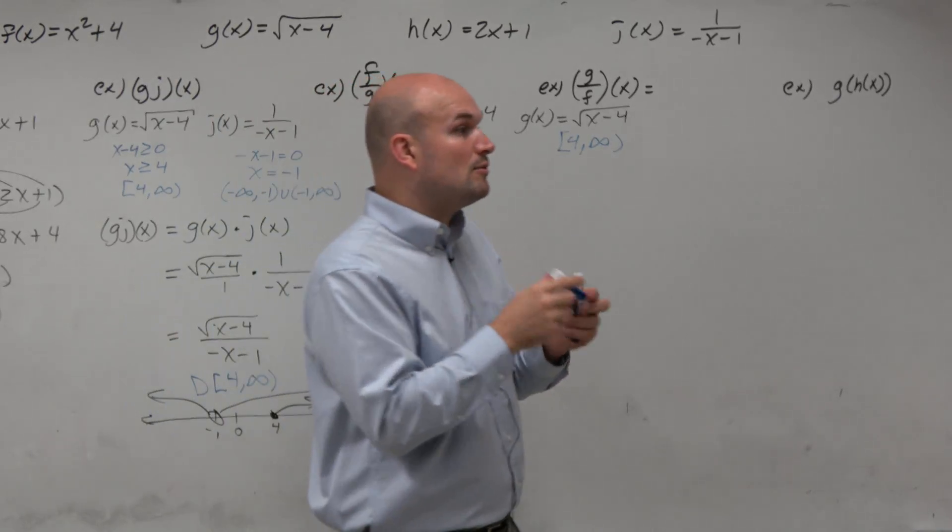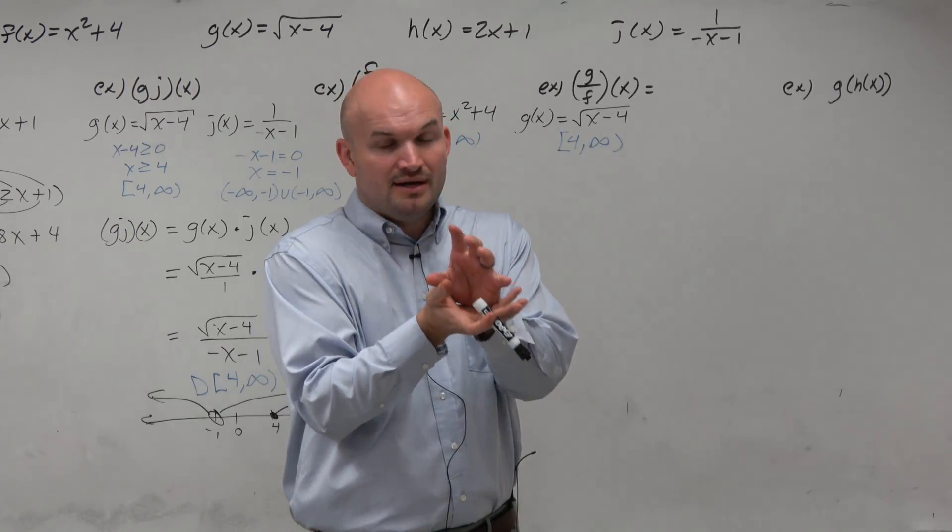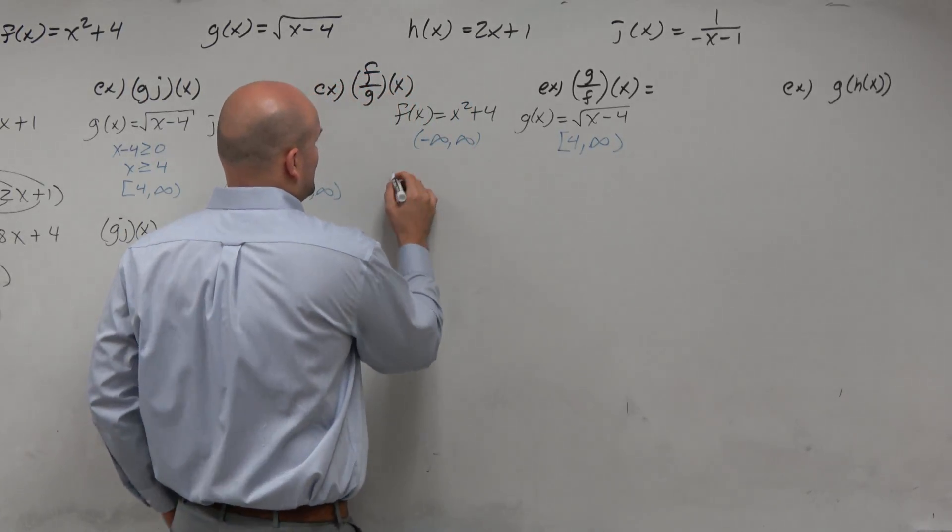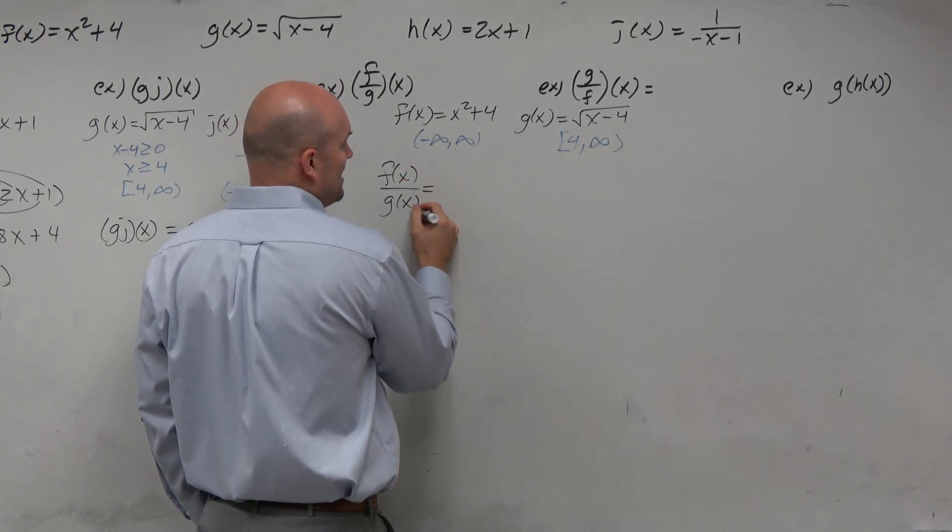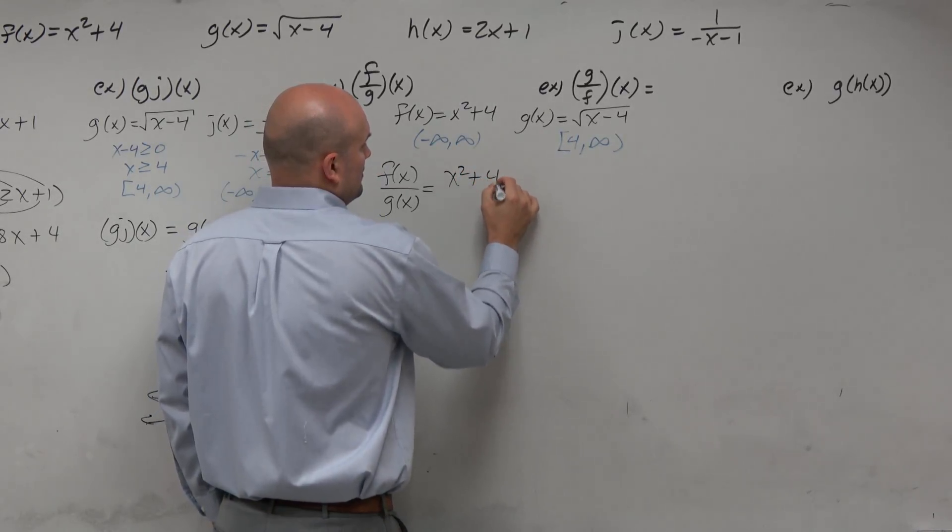But we've got to be careful now when we're using division, because you've got to think division is putting one function in the denominator. And we know that the denominator cannot equal 0. So when I do f of g of x, I'm now putting g of x in the denominator. So can 4 be a value anymore? No,